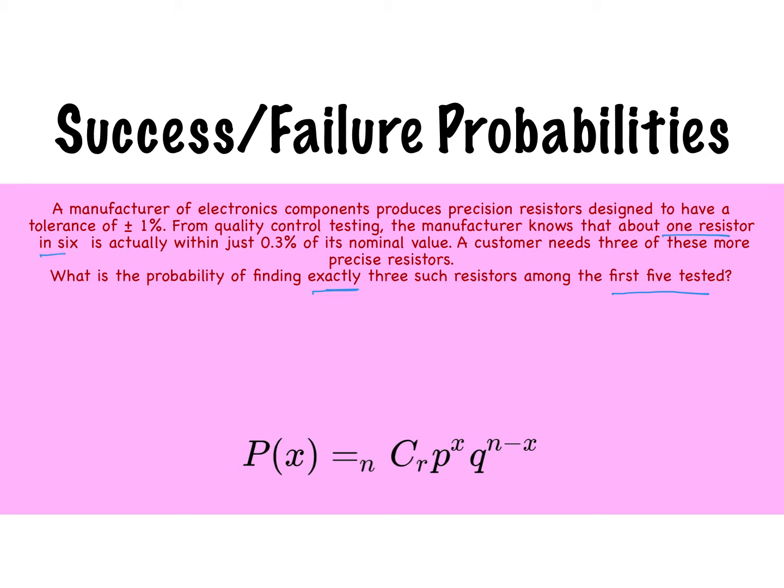So the probability of success is one out of six, so that's your success. Failure, then, is the opposite, five out of six.